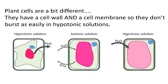Plant cells are a little bit different. Plant cells have both a cell membrane and a cell wall. So they don't explode as easily when they're in really hypotonic solutions, and they don't completely collapse — at least not initially — when they're in hypertonic solutions.